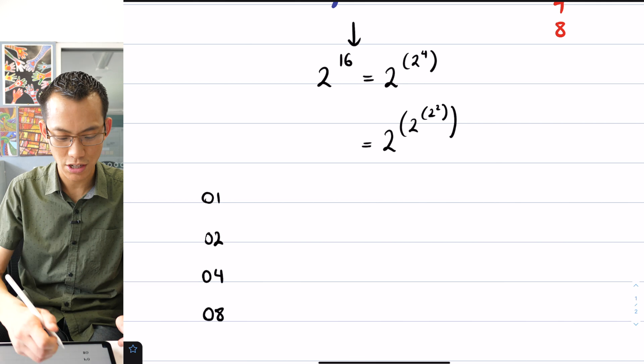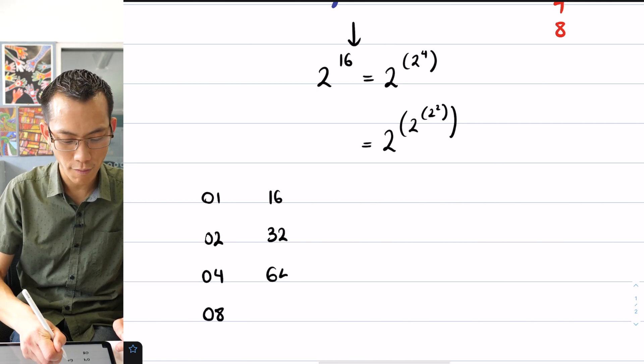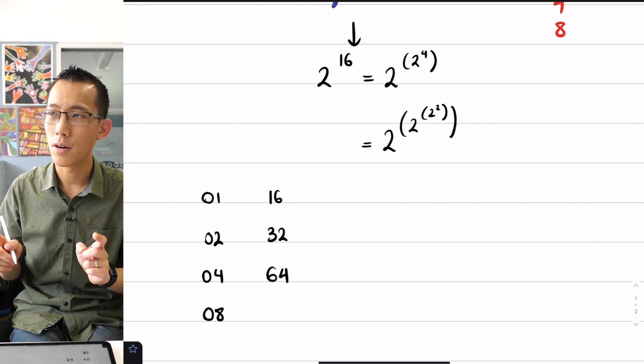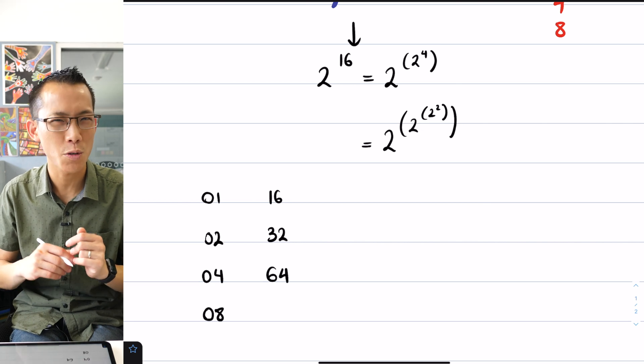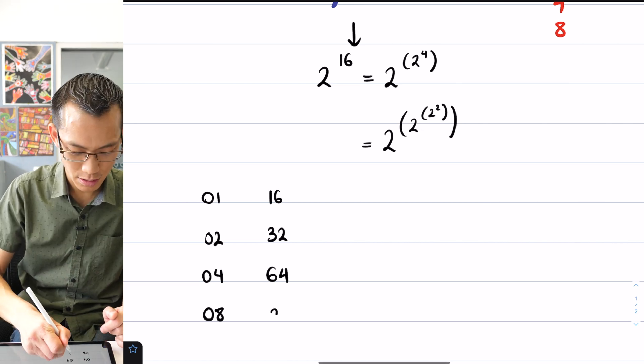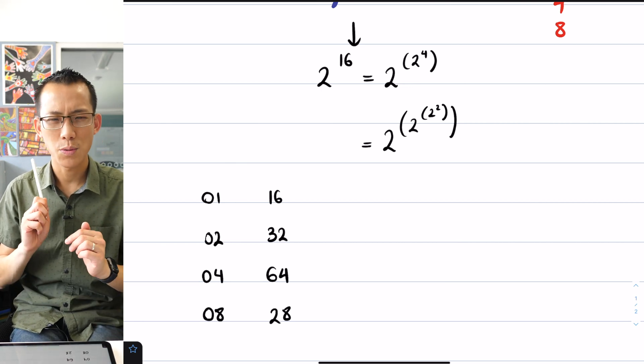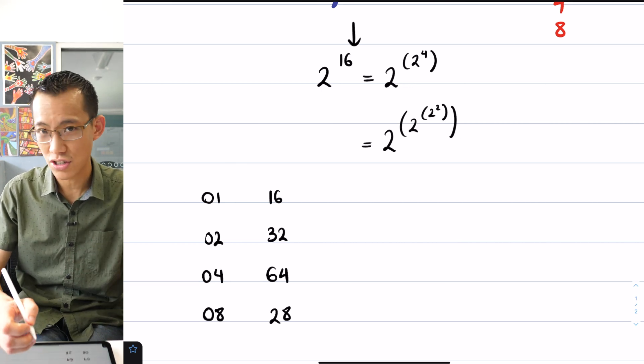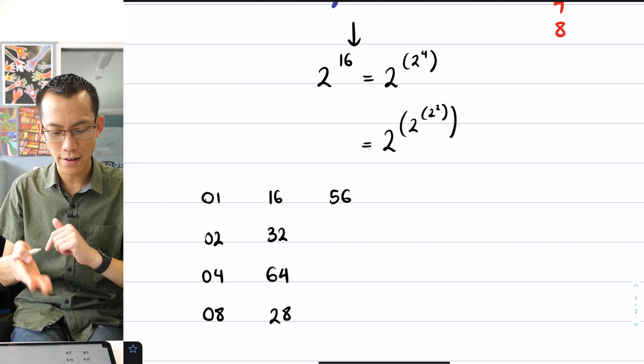When we cross over into double digits, we then get 16, 32, 64. And at this point, okay, we go into three digits, but let's just focus on the tens and the units for a second. It'd be 128. So we're going to get 28 as our tens and our units. After 28, it's going to be—well, I can just double that. It's going to be 56. The next one after that, if I just think about 56, I don't have to worry about the hundreds and the thousands.